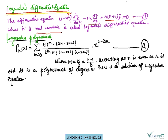This type of differential equation is called the Legendre differential equation. The second term is the Legendre polynomial, denoted by Pn(x). Pn(x) is equal to the summation from m=0 to M of (-1)^m times (2n-2m)! divided by 2^n times m! times (n-m)! times (n-2m)! times x^(n-2m), where capital M is n/2 or (n-1)/2 according as n is even or odd.